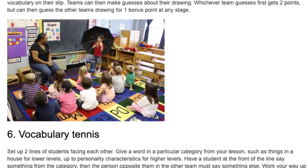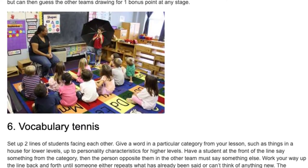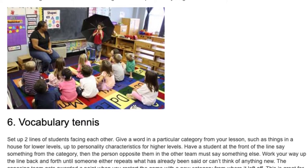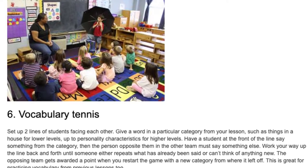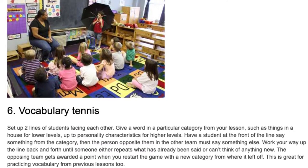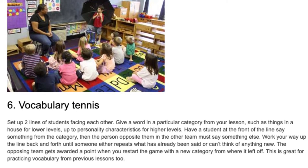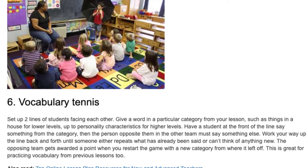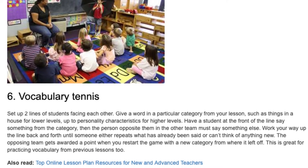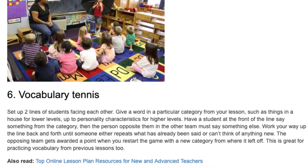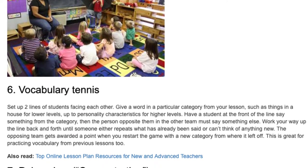Vocabulary Tennis. Set up two lines of students facing each other. Give a word in a particular category from your lesson, such as things in a house for lower levels, up to personality characteristics for higher levels. Have a student at the front of one line say something from the category, then the person opposite them in the other team must say something else. Work your way up the line back and forth until someone either repeats what has already been said or can't think of anything new. The opposing team gets awarded a point, then restart the game with a new category. This is also great for practicing vocabulary from previous lessons.